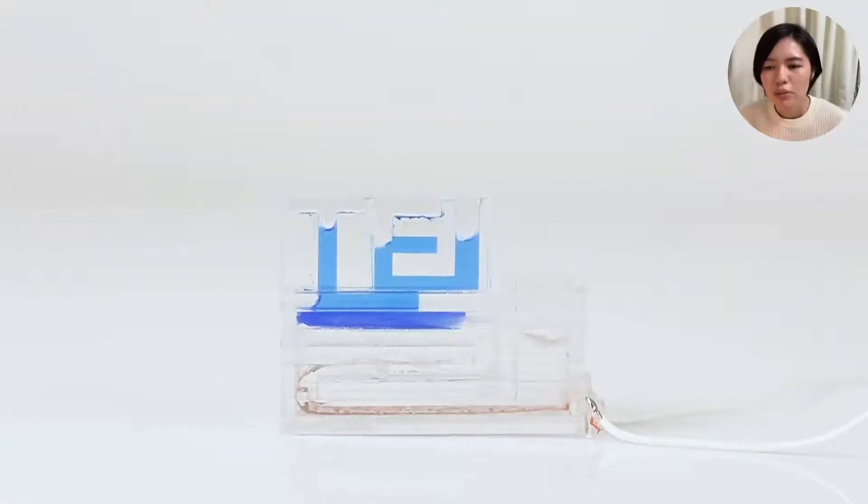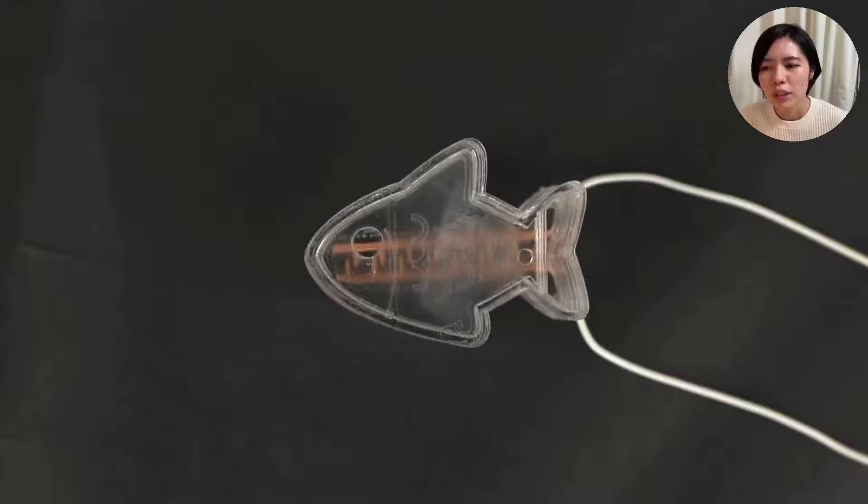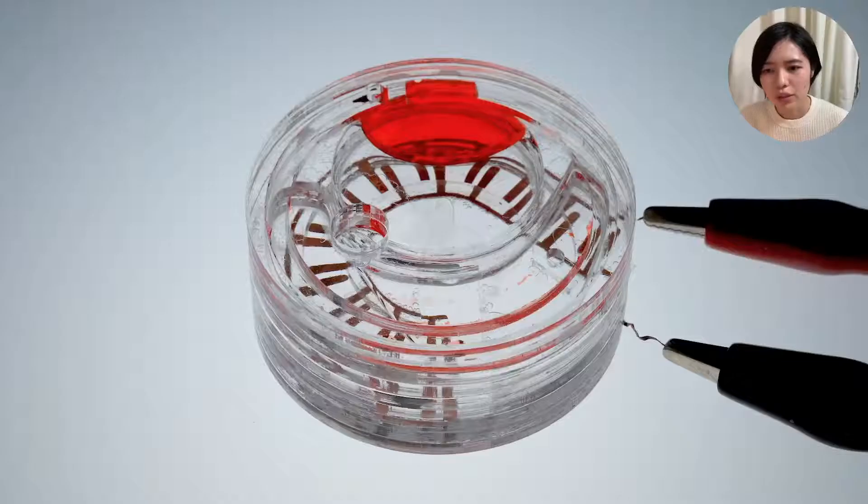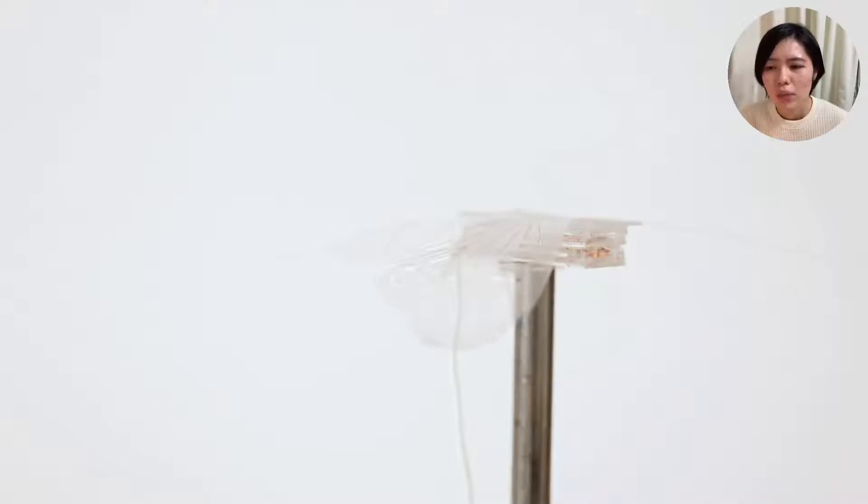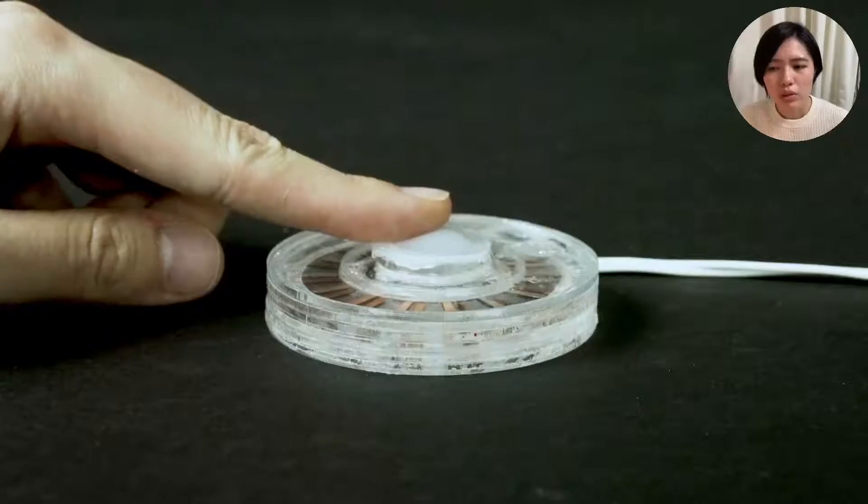To arrange the EHD pumps and fluid paths in appropriate positions inside 3D objects, we stacked acrylic plates and inserted electrodes. By using these embedded pumps, we can control the flow of fluid to change the object's color, shape, and motion.